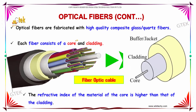Optical fibers are fabricated with high quality composite glass or quartz fibers. Each fiber consists of a core and a cladding layer. The refractive index of the material of the core is higher than that of the cladding.